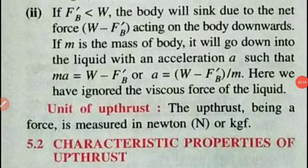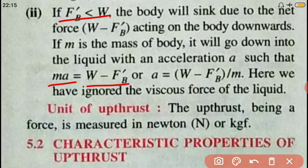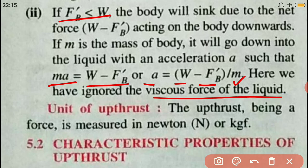Coming to the next point: if FB dash is less than W — that is, the total buoyant force is less than the weight of the body — then the body sinks due to the net force W minus FB dash, which is the apparent weight, not being zero. If m is the mass of the body, it moves down with acceleration a such that m × a = W − FB dash, or a = (W − FB dash) / m.